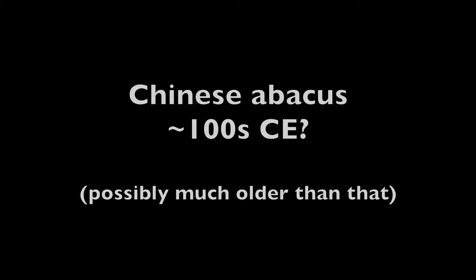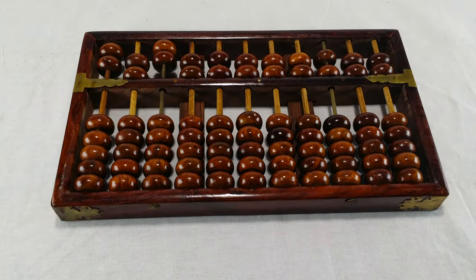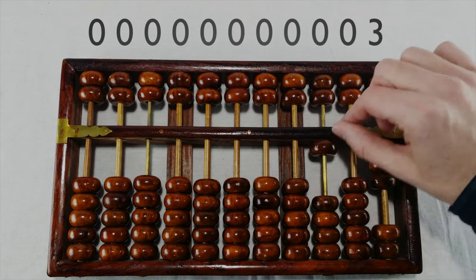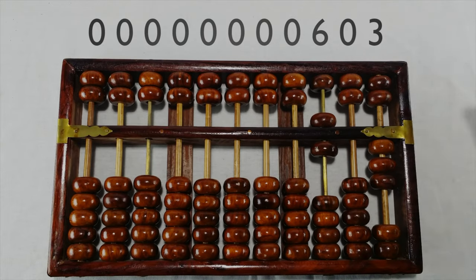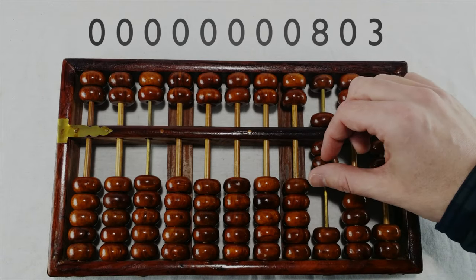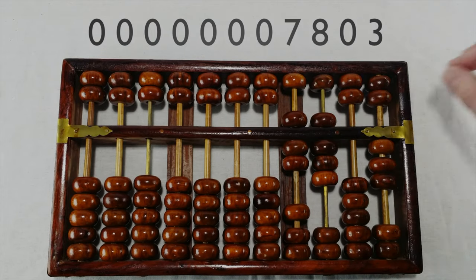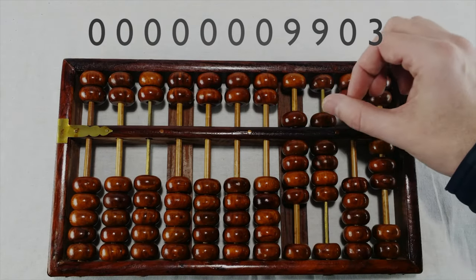The Chinese Abacus. Each column is a digit. The beads up top represent 5, and the beads on the bottom represent 1. As I go, I'm multiplying digit by digit and adding the results into the total. I had to practice this particular problem over and over to make it look like I know what I'm doing, and I'm still really slow at it.